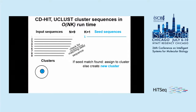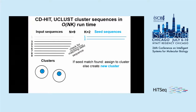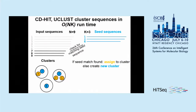CD-HIT and UCLUST work in a greedy incremental way. You start with the first sequence, compare it against your seed sequence set — since there's nothing, it becomes the first seed. Then you go to the second sequence, compare it to the first, and if it fulfills your clustering criteria you add it; otherwise it becomes another seed, and so on. Your seed sequence set grows longer and longer, resulting in a runtime of n times k — the number of sequences times the number of clusters. For very large sets, this can be nearly quadratic.